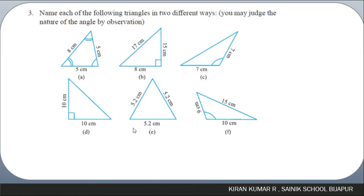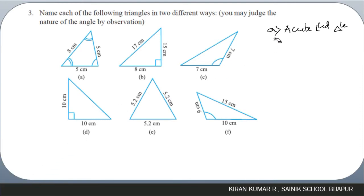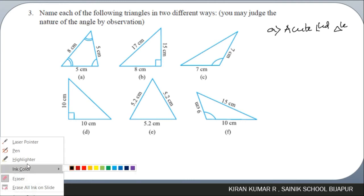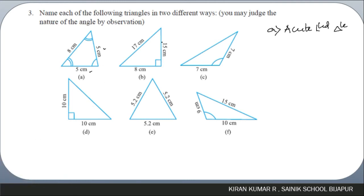Question number three: name each of the following figures in two different ways. For the first figure, all angles are less than 90 degrees so it forms an acute-angled triangle. Also, two of the sides are equal, so it is also an isosceles triangle.